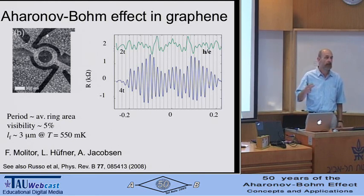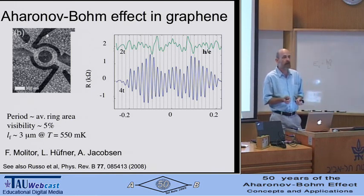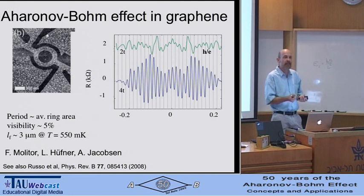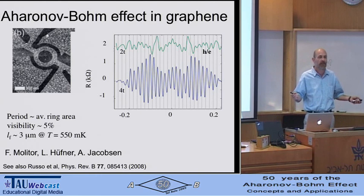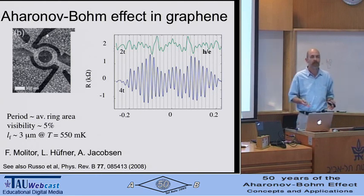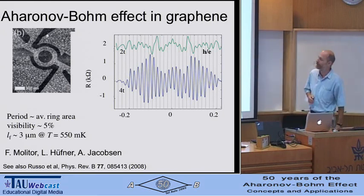The nice thing about the future of graphene is probably that you can make things very, very small, because you're really talking about one monolayer of atoms. You can make things very small, and in the end you're only limited by the technology in your lab—which is very different from semiconductors, where electrons are typically below the surface and you can only make things as small as that depth, which is a technological limitation.